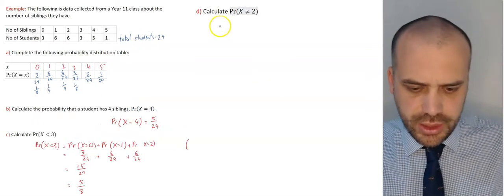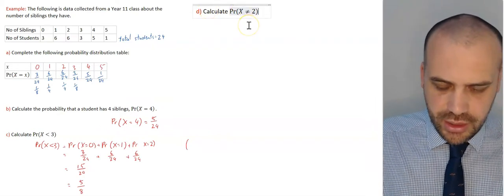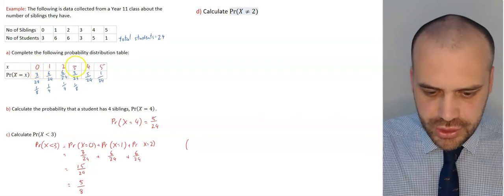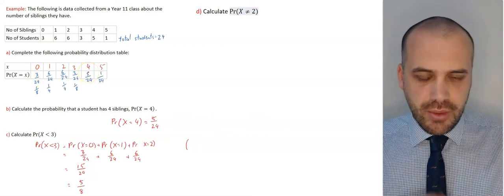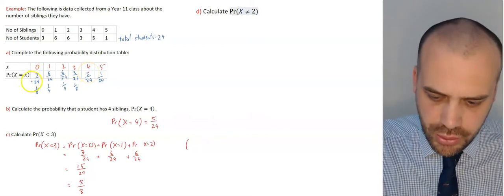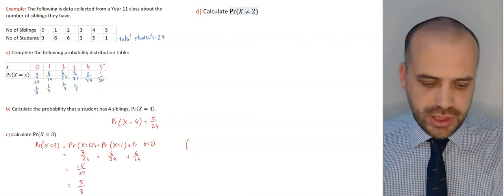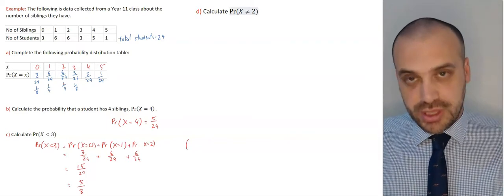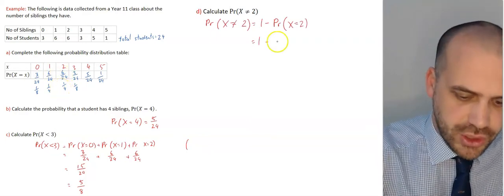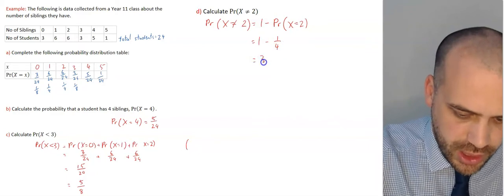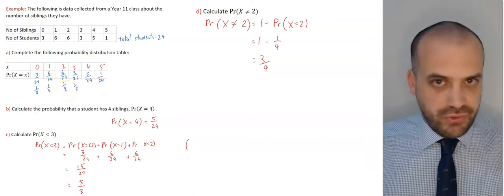You might also be asked to calculate the probability that X does not equal 2 — that someone does not have exactly 2 siblings. One approach is to add up all values that aren't 2: zero, one, three, four, and five. But remember, all probabilities add up to 1, so we can just do 1 minus P(X = 2). That's 1 minus 1 quarter, giving us 3 quarters. Much easier than adding up five different numbers.